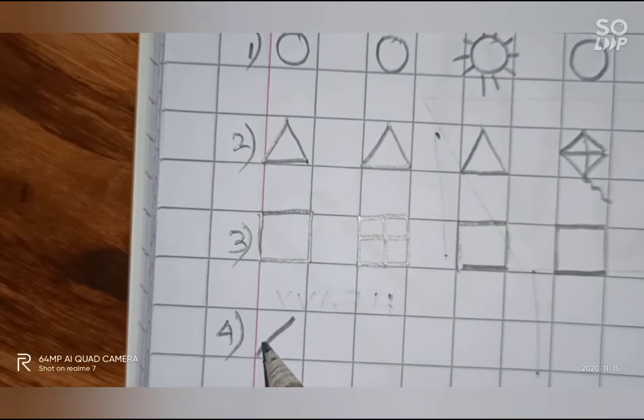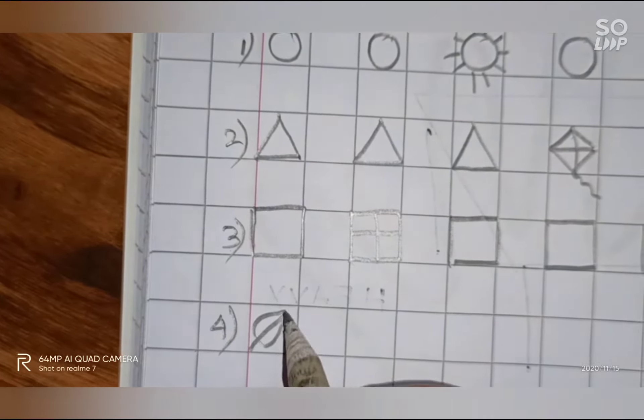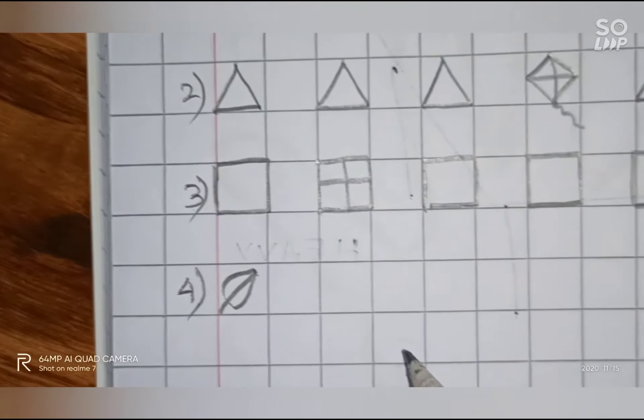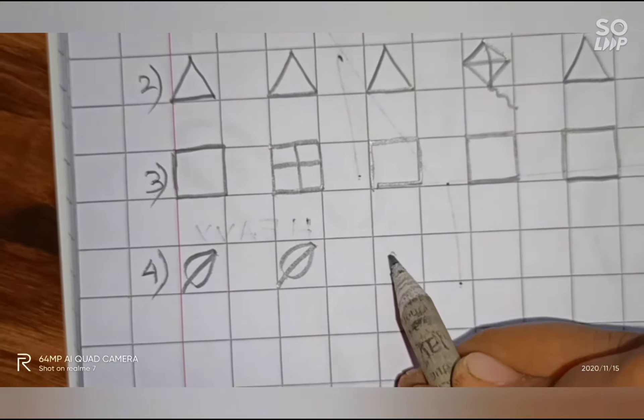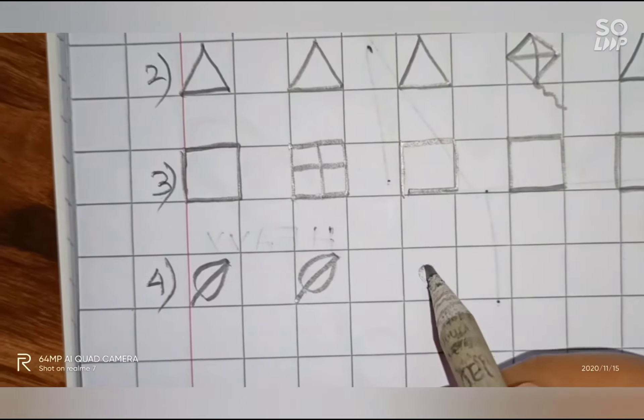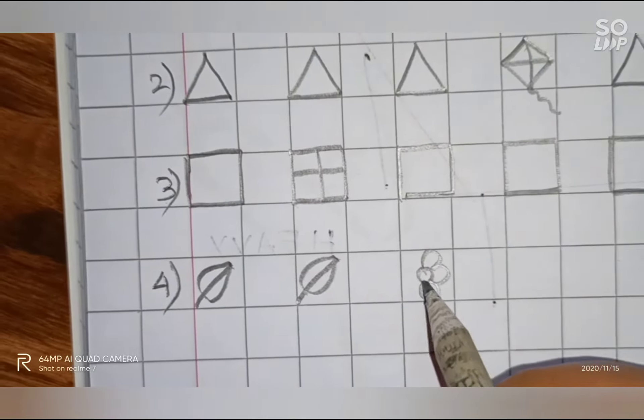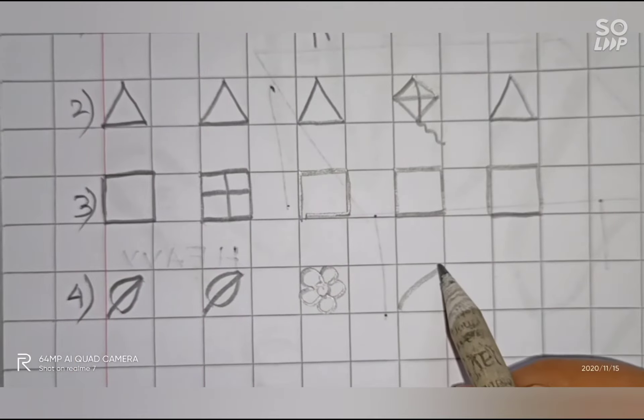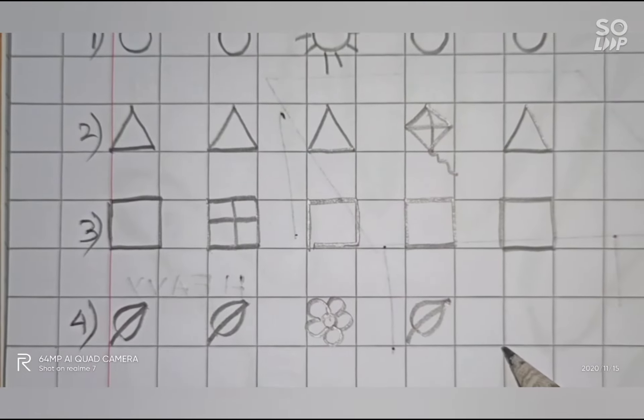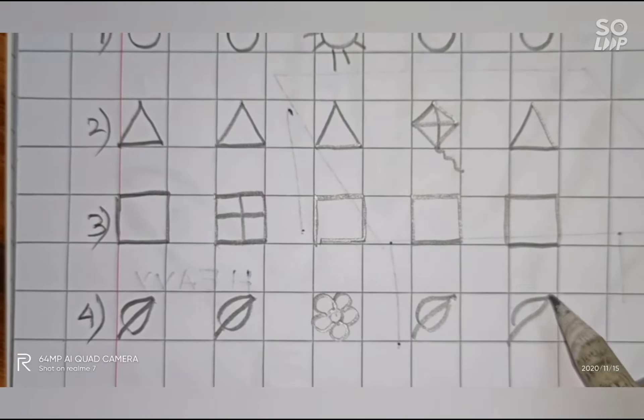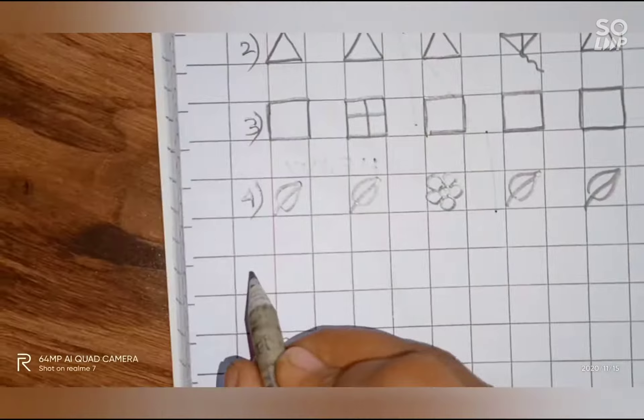We are going to draw a leaf. It's very easy. Draw a slanting line like this and join the lines. We are going to draw a flower. So we have leaves and a flower. Draw leaves like this. The next one.